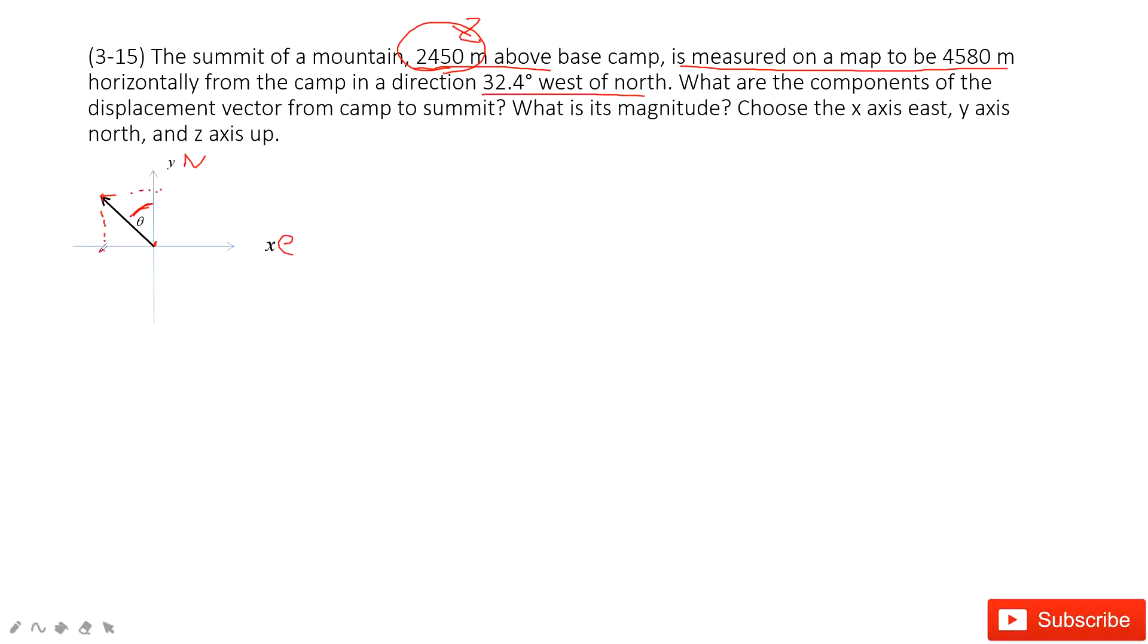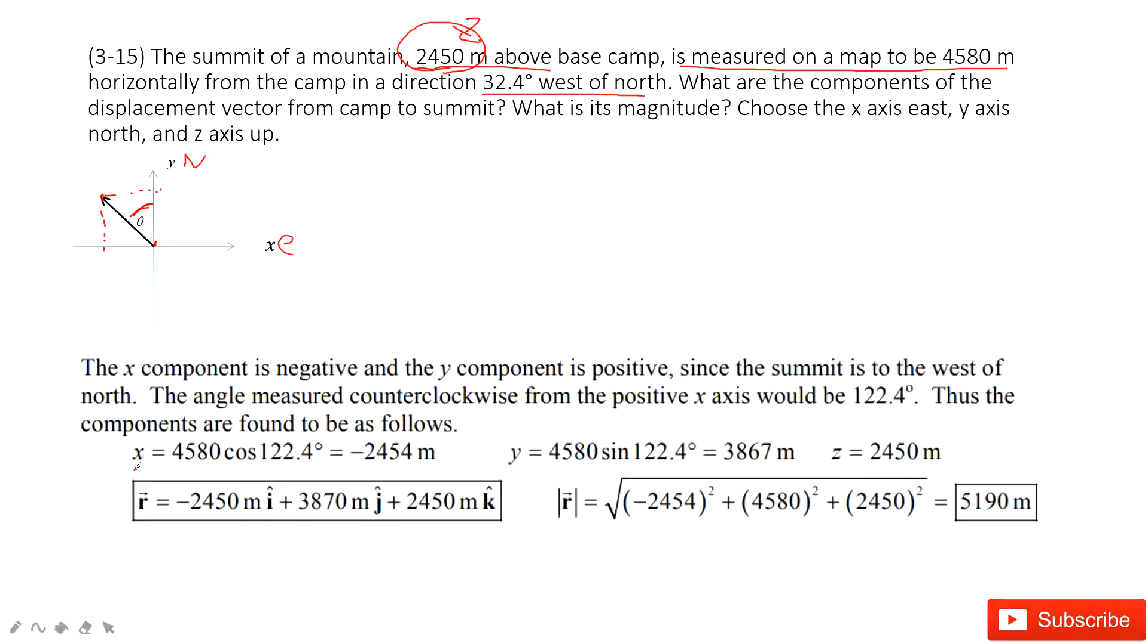So we can see the X-component is negative and the Y-component is positive. So you can see the X-component, we use this one. When we do this one, we can see this must be negative sign. Do you agree? So this is 122.4 degrees in this one.